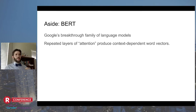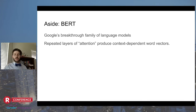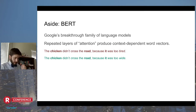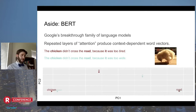You can understand BERT best as a model that produces dynamic word vectors. It produces representations of words that depend on the context that that instance of the word appeared in. For example, consider these two sentences, which are both answers to the question of why didn't the chicken cross the road. These two sentences are the same, except for the very last word: the chicken didn't cross the road because it was too tired, or because it was too wide. That last word changes the context of these sentences enough that the meanings of some of the other words change.